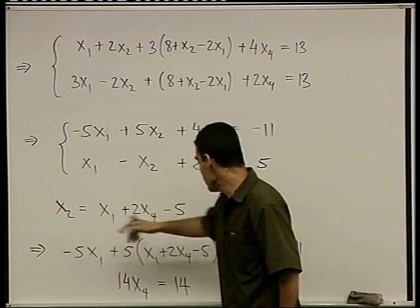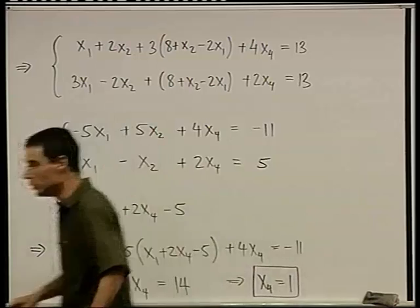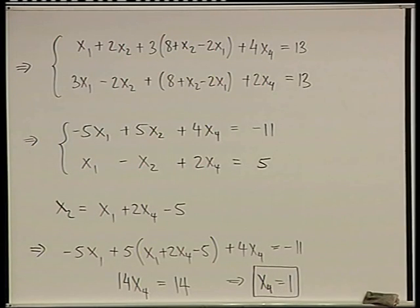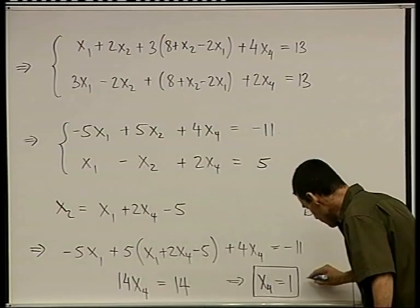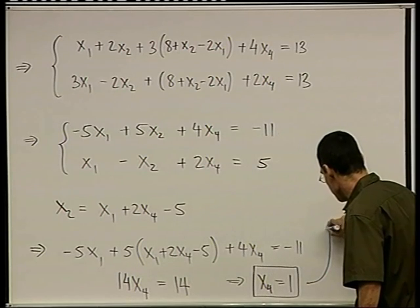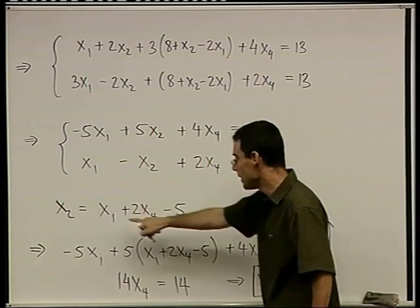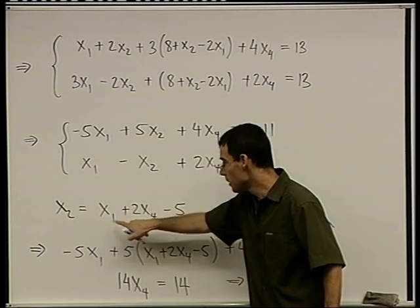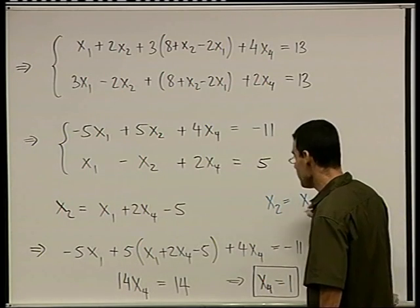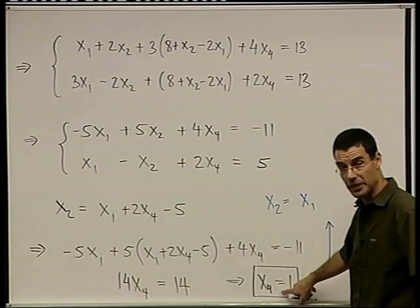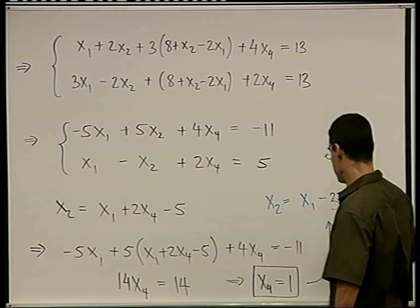If x4 is 1, what can I say about x2? Let's maybe trace it back in blue instead of writing on a million different boards. So x4 is 1, therefore from this it follows that x2 has to be x1 plus 2x4, but x4 is 1, so plus 2 minus 5, which is minus 3. Do you agree?